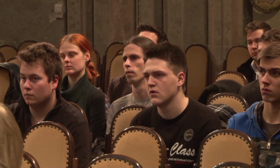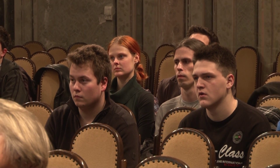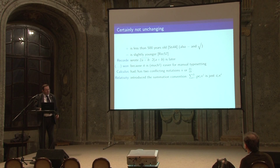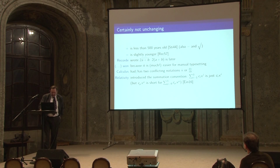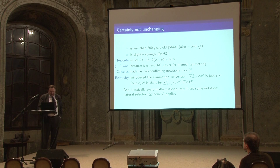Calculus had — and indeed still has — two notations. They were in bitter conflict; they are now in armed truce for differentiation. Relativity introduced another change: in 1916, Einstein introduced the summation convention. Instead of writing out the full sum, he just wrote C_i X_i and you were meant to sum it — except that if you use a Greek letter, you sum from naught, not one. Practically every mathematician introduces some notation, and there's a sort of natural selection: some notation is remembered and some isn't. It's a growing subject — not fixed.